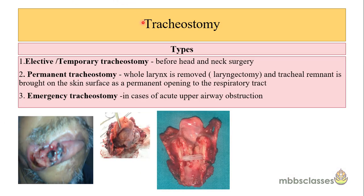Tracheostomy can be divided into several types. It may be elective, or we call it temporary tracheostomy. It is temporary because it is done for a certain period of time, and after the purpose is over the stoma can be closed. Elective tracheostomy is done before head and neck surgery. Permanent tracheostomy is done in cases where total laryngectomy is performed, and the tracheal remnant is brought to the skin surface as a permanent opening to the respiratory tract.